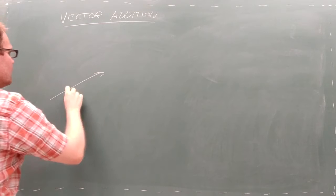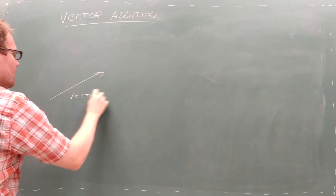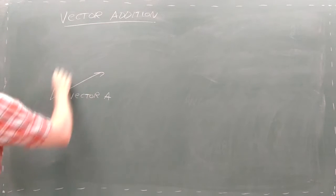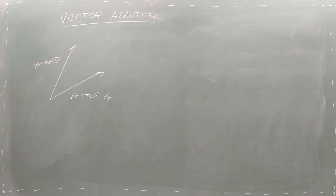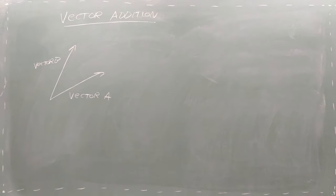Let's suppose you want to add two vectors, A plus B. There are two ways you can think about this process: visually and mathematically.